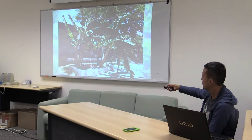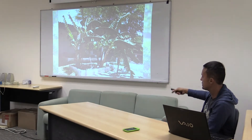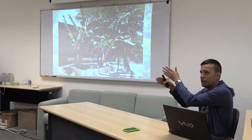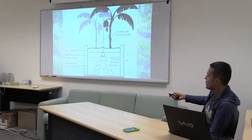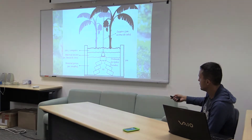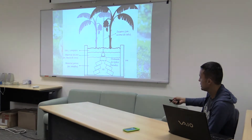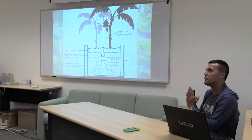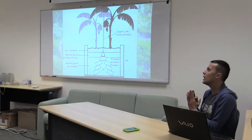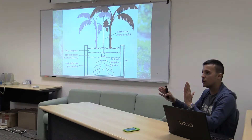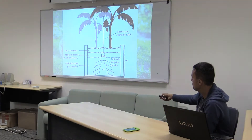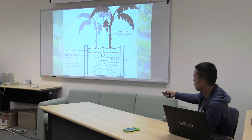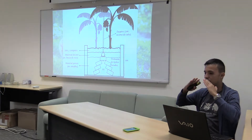The aquaponics system uses floating trays placed on the water surface of a large tank, each tray serving as a growing platform for plants. This is the system structure being demonstrated.